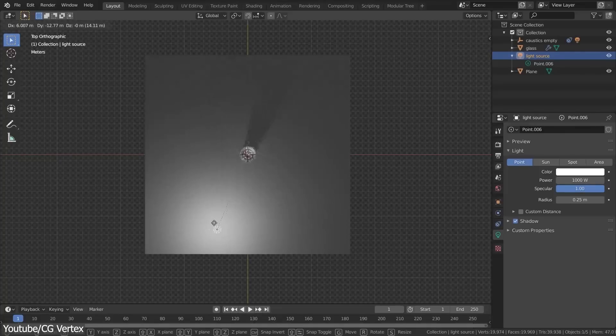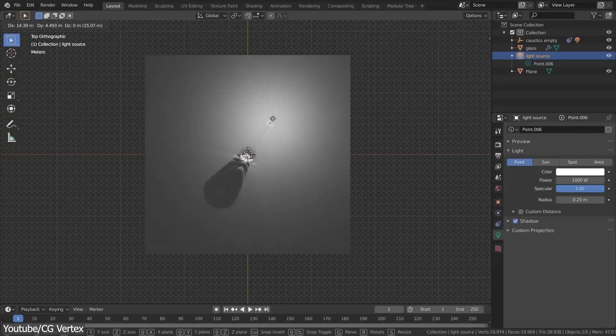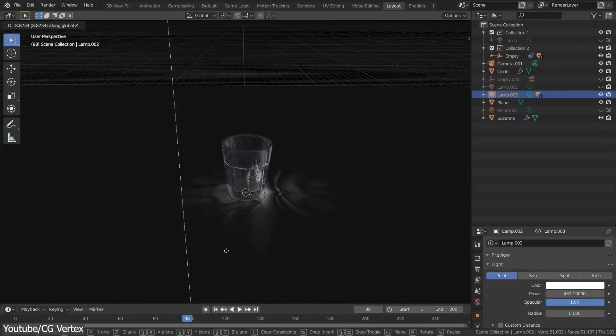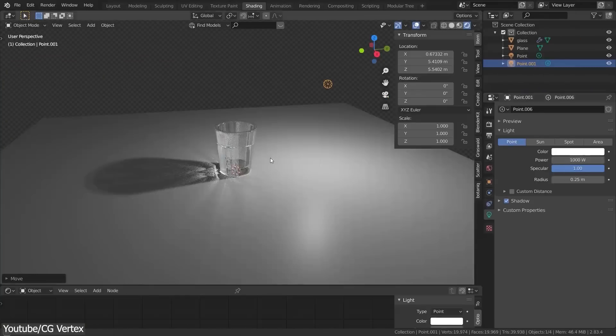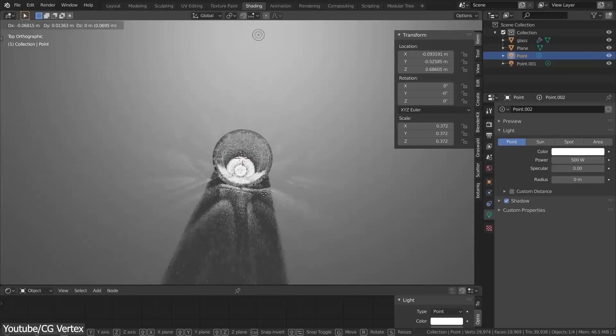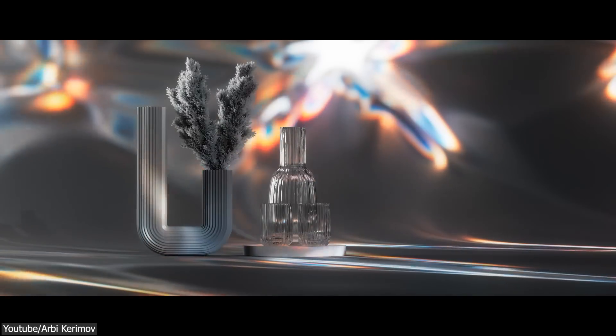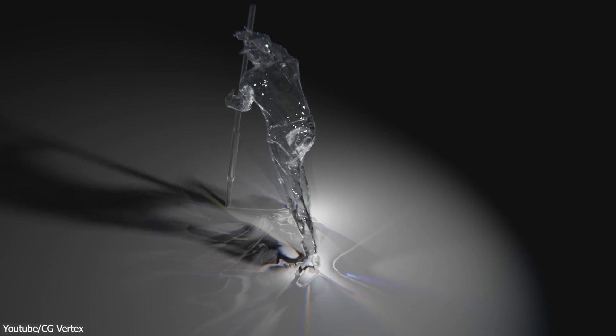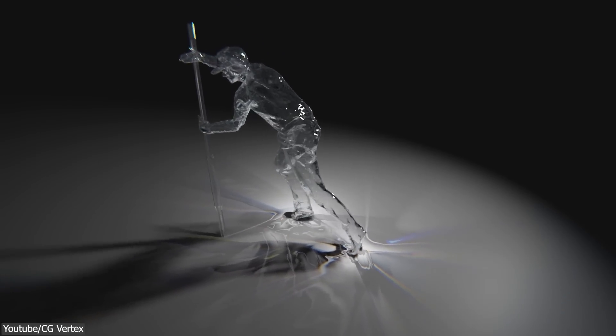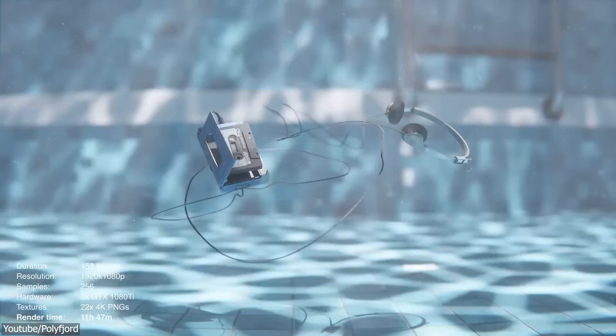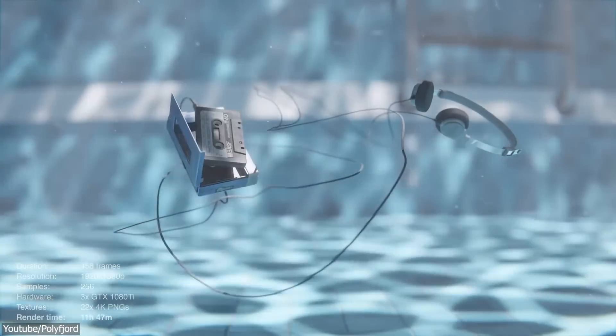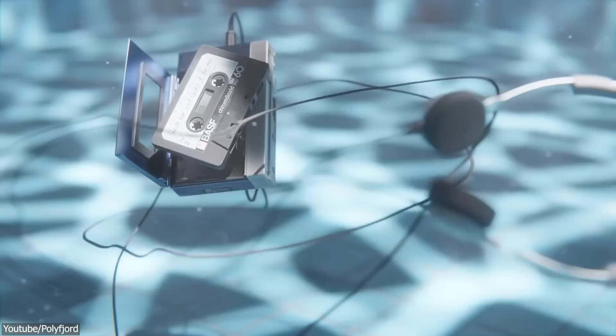Therefore, VFX artists often use various techniques to fake caustics instead of simulating them fully, which I have to admit is the smartest move, because this is the most optimal way. These techniques may include using pre-rendered caustic patterns or creating caustic-like effects through compositing or texture mapping. By carefully crafting these effects, 3D artists can achieve a visually convincing representation of caustics without a lot of hassle.